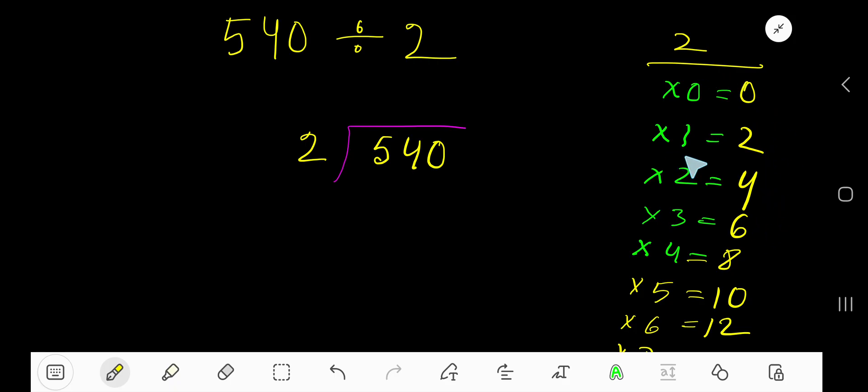So this is the easy way to find the multiplication table of 2. Now, 2 goes into 5 how many times?